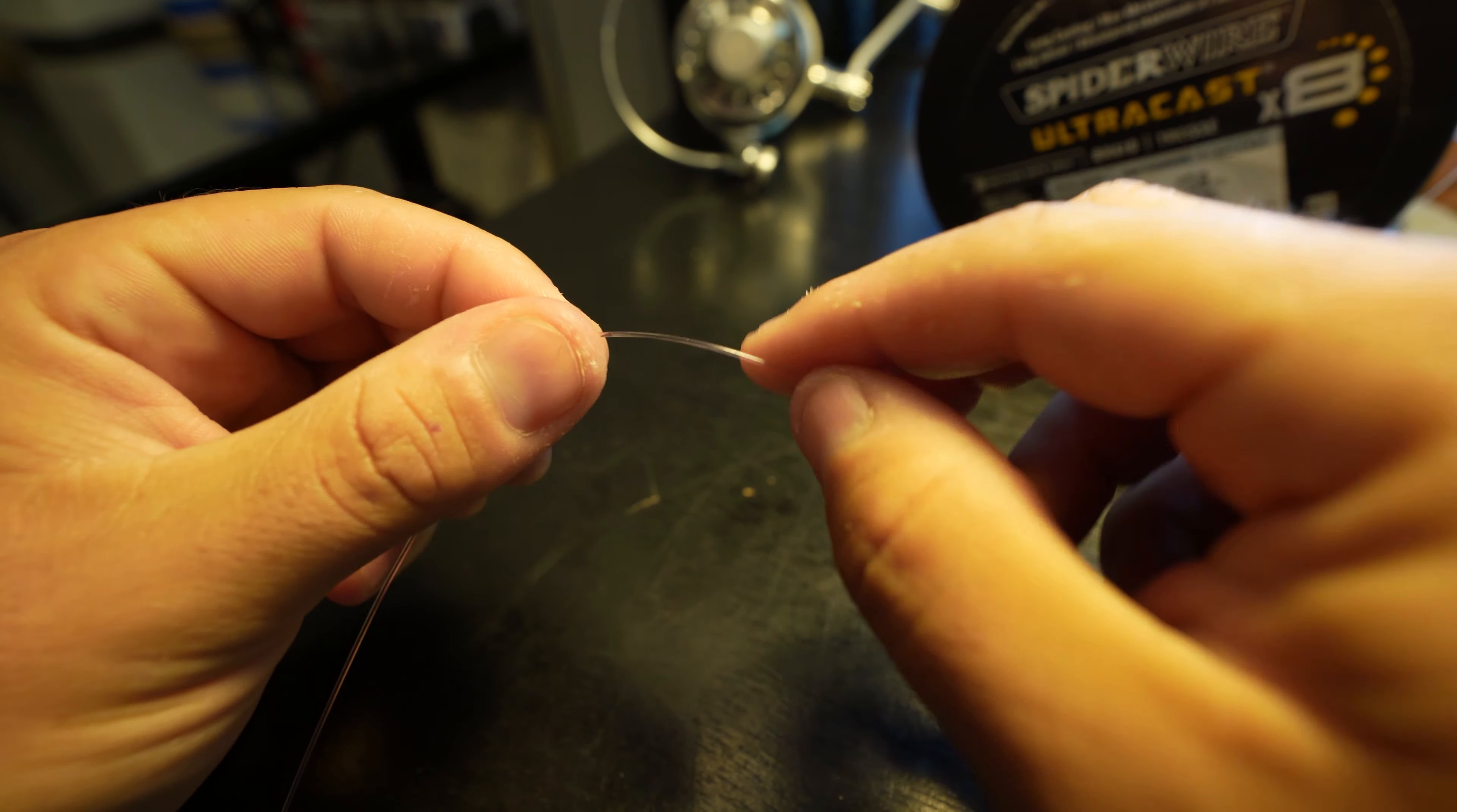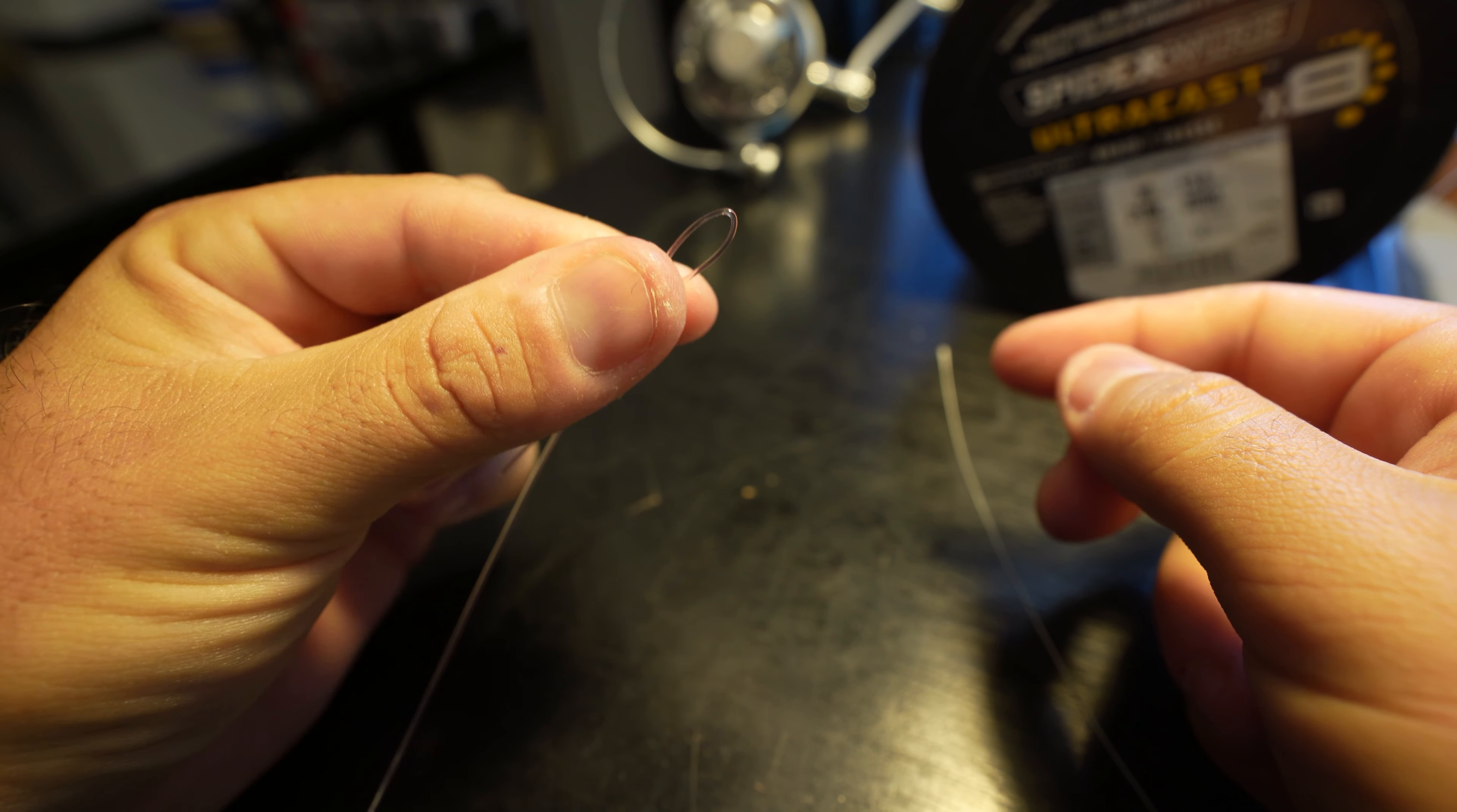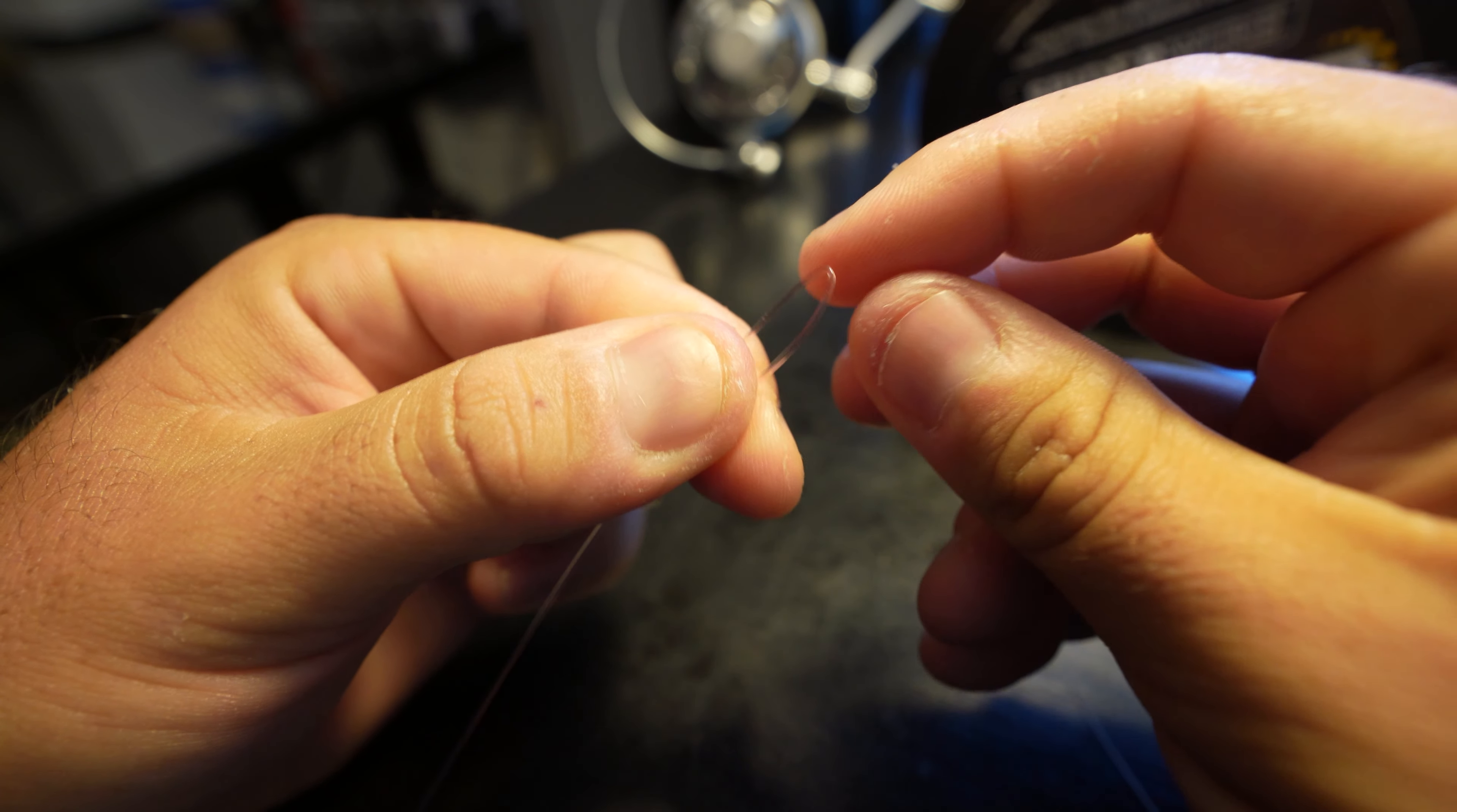We're going to put this braid down for just a second and start with our leader here. I'm going to make a loop in it. I'm going to over-exaggerate a few different things for this knot-tying process to make it easier for you guys to see. Just make a loop and pinch it with your left hand, then put a crease in it just like this.